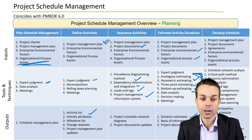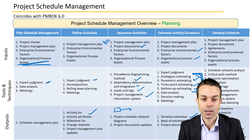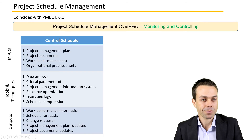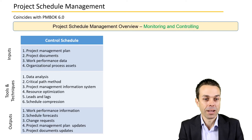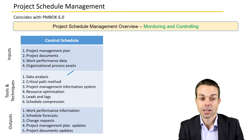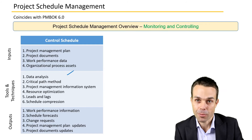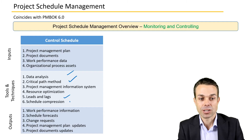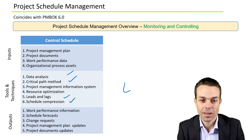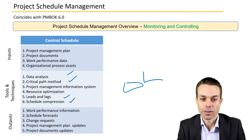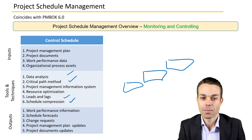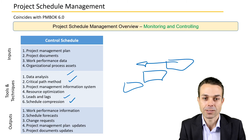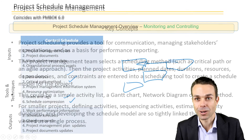For outputs, we have the basis of our estimates, the activity list, and project schedule network diagrams — where we're outlining and making visual what the project is going to look like. Under control schedule, new items include data analysis, the critical path method, leads and lags, and schedule compression techniques — so how we can compress a schedule that spans a long time so that it only takes a shorter amount of time.